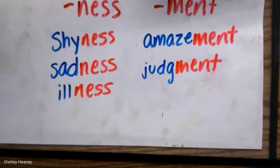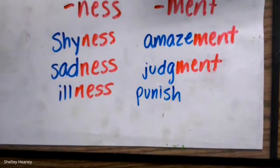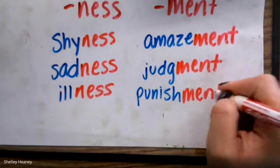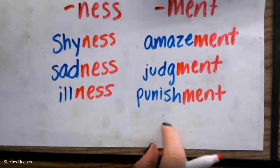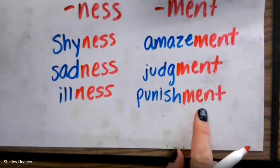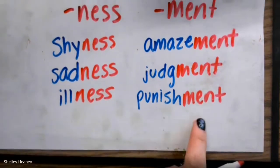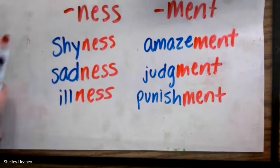The last one we're going to talk about is 'punish.' If I have 'punish' and I add the suffix M-E-N-T — 'punish' means that you got in trouble and have to have a consequence. Adding -ment means the doing of that action, so getting a 'punishment' means like you got grounded or maybe got your favorite game console taken away. We can add these suffixes at the end to make a new word.